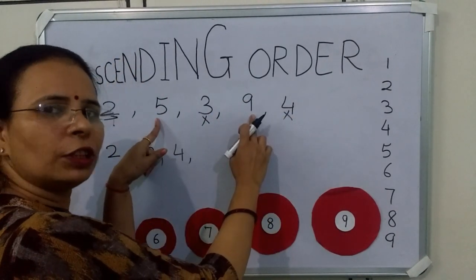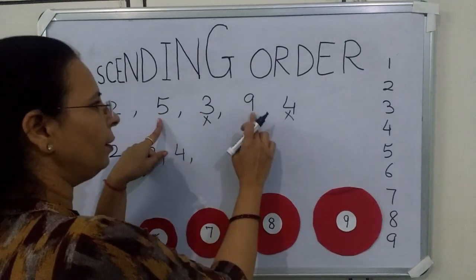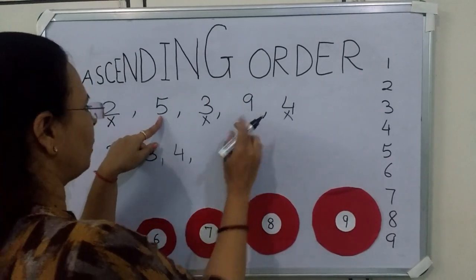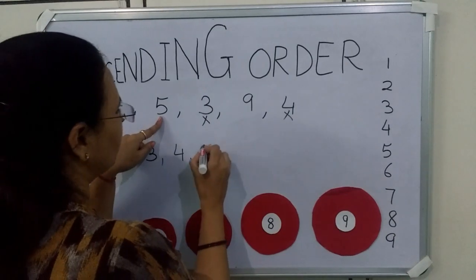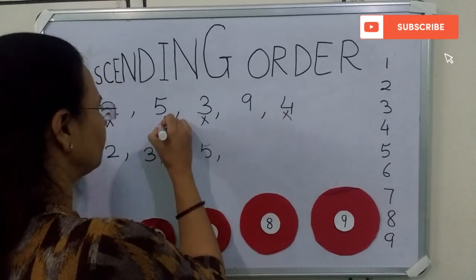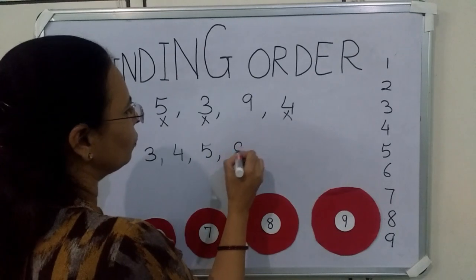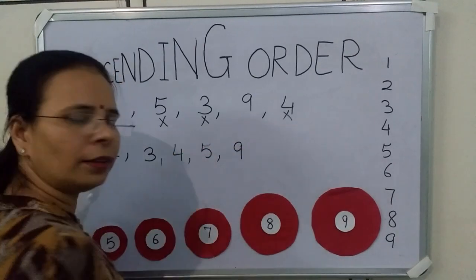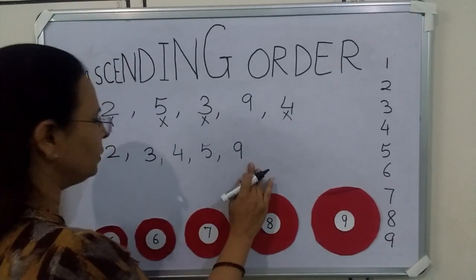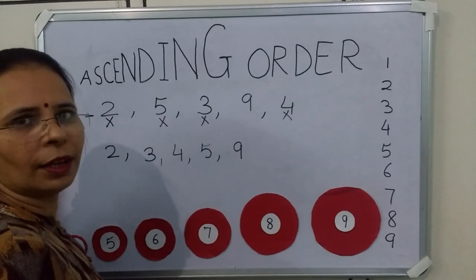We have to find which is smallest: 5 and 9. Which is smallest? 5. So we will write 5. And then what is left? Only 9. So we will write 9. Now see, we have arranged these numbers in ascending order.